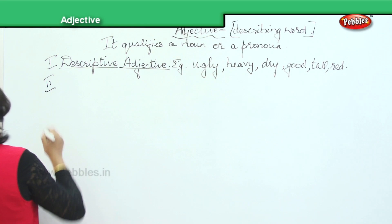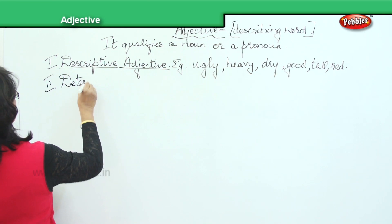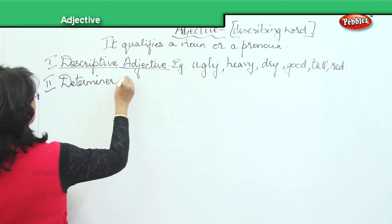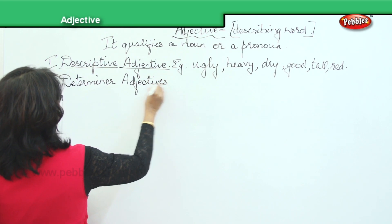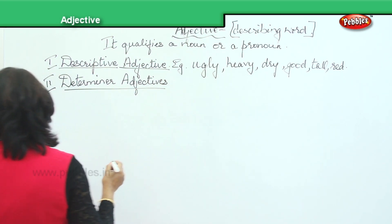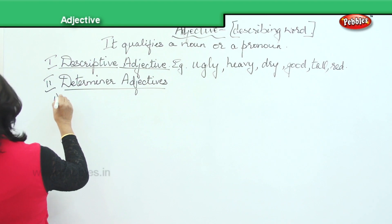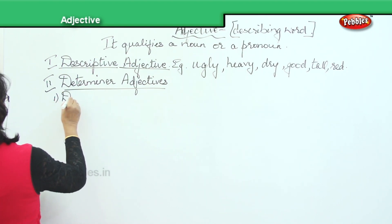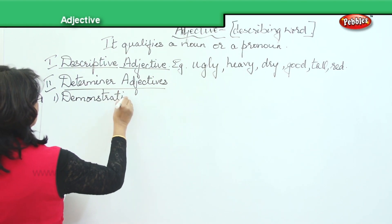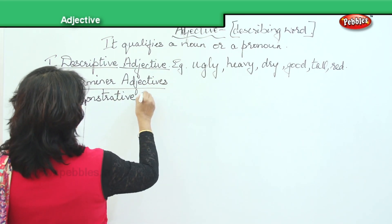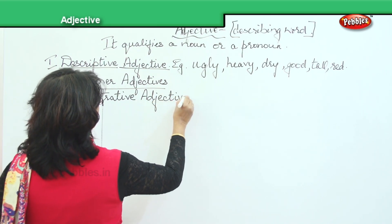The second type is determiner adjectives. There are many kinds under this. The first one is demonstrative adjectives.